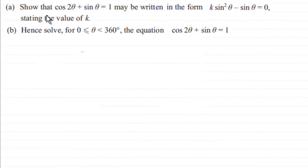Hi, now in this example for part A we've got to show that cos 2θ + sin θ = 1 may be written in the form k sin²θ - sin θ = 0, and we've got to state the value of k.